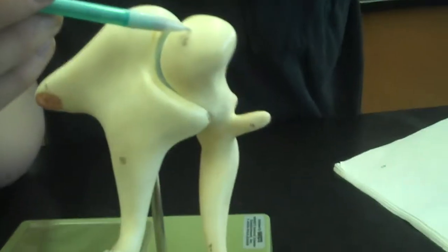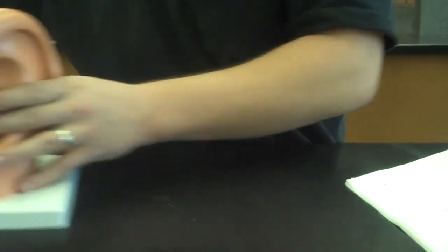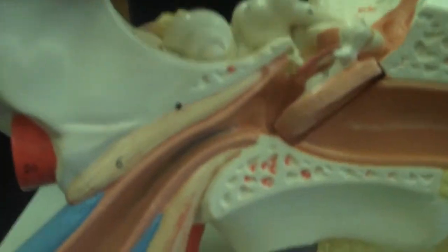So you have the malleus, the incus, and the stapes. The stapes is connected to the inner ear and it helps transmit vibrations to transmit the signals. So let's look at the inner ear now.